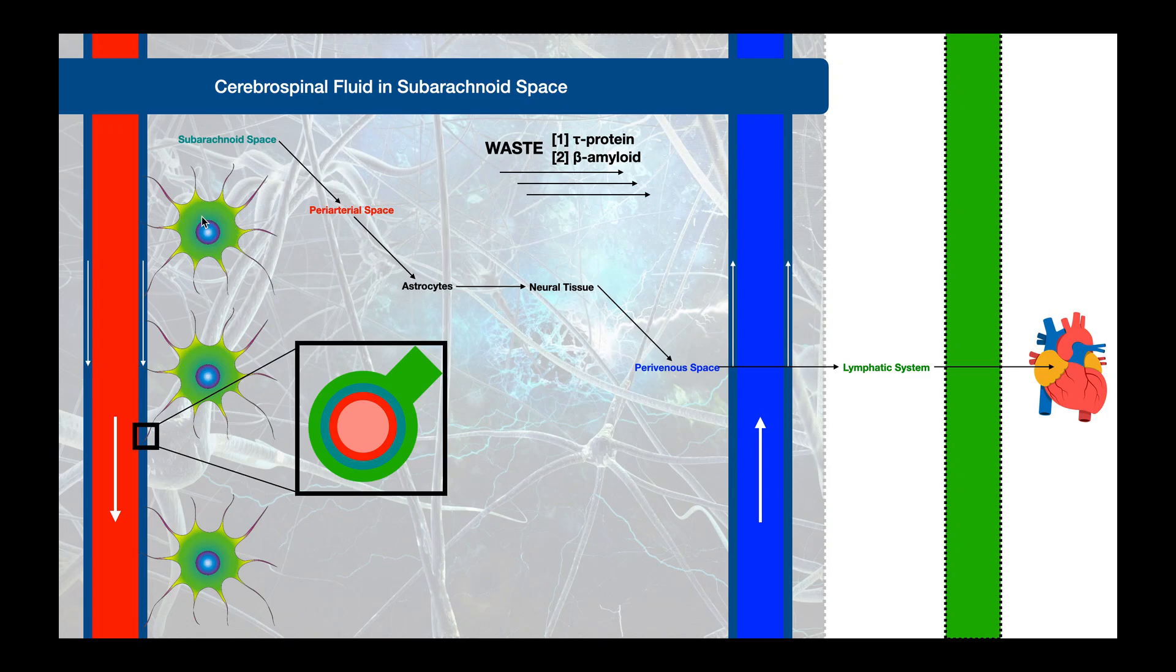You'll see here an astrocyte with all these extensions or legs. These legs terminate at feet that are in contact with that small artery. If we zoom in on one of those extensions, we can see the extension and the foot going around this small artery. In this dark blue, this is that periarterial space with cerebrospinal fluid. The cerebrospinal fluid circulates from the subarachnoid space into this periarterial space, which is made possible by these astrocyte projections.